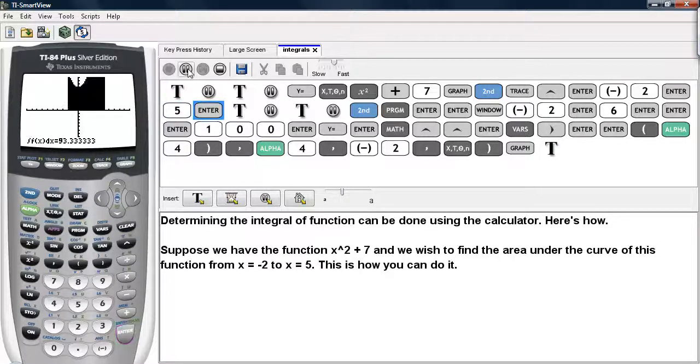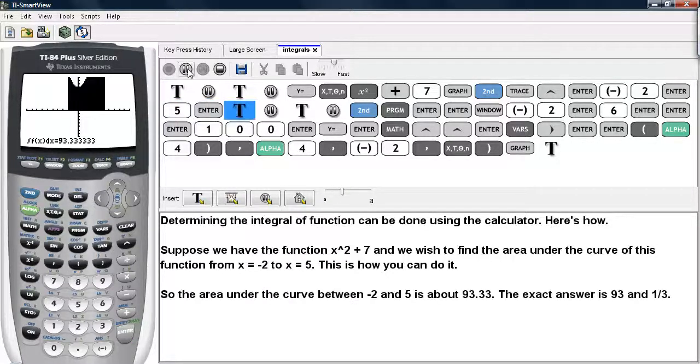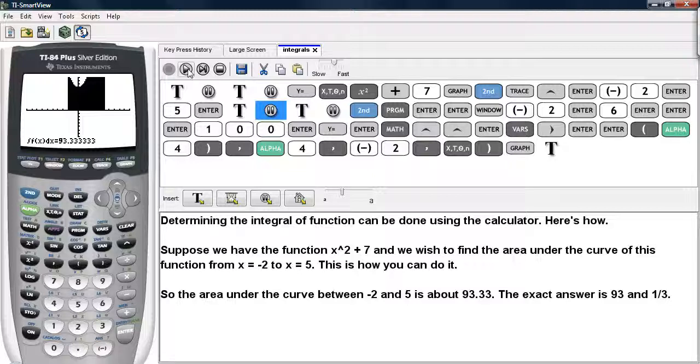Then we hit enter, and it gives us the evaluation of the area under the curve. So the area under this curve between negative 2 and 5, according to the calculator, is about 93.3 repeating. And the exact answer is 93 and 1 third.